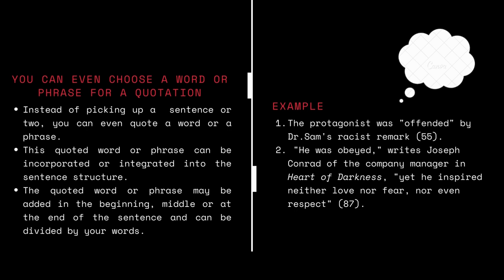Now look at the second example. Initially you choose a phrase from the original text, close the quotation marks, and then come up with your own words. 'He was obeyed,' and then comes your own words: Joseph Conrad of the company manager in Heart of Darkness, and then you continue with a few more words — 'yet he inspired neither love nor fear nor even respect.' You close it, bring in the page reference, close the parenthesis, and then comes the full stop.